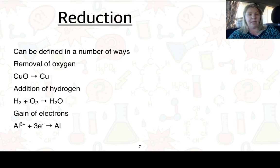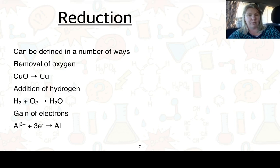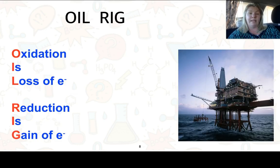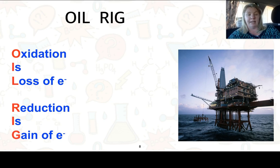Reduction is the other half of the reaction, and it can be defined in a number of ways as well. It could be the removal of oxygen — so copper oxide has become copper. It could be the addition of hydrogen: H2 plus O2 goes to H2O. And also the gain of electrons — in the final example here, aluminium ions plus 3 electrons becomes aluminium. We have a saying called OIL RIG: Oxidation Is Loss, Reduction Is Gain. Since we quite often look just at electrons, oxidation is loss of electrons and reduction is the gain of electrons.